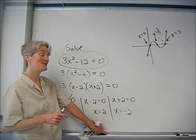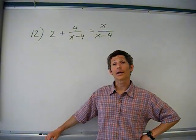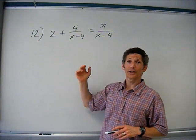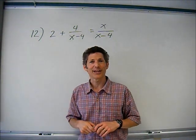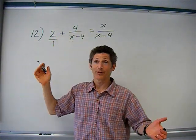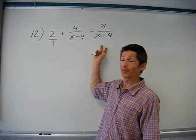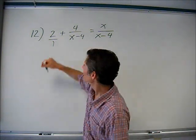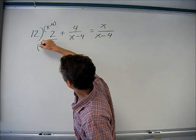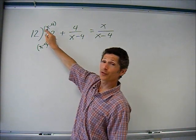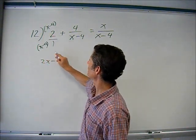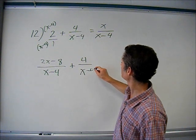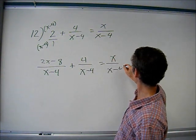I'm going to use the common denominator method on this one. More than one way to do it — I could move things to the other side and cross-multiply, but I prefer common denominator. I just have this one denominator to worry about: x minus 4. I need to make the left side have that denominator, so I put 2 over 1, multiply top and bottom by x minus 4. The top becomes 2x minus 8 over x minus 4. Everything else stays the same: 4 over x minus 4 equals x over x minus 4.